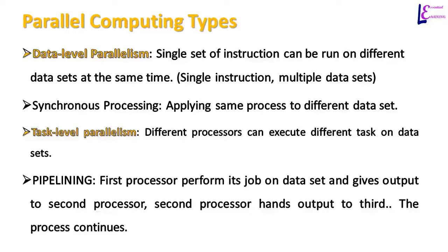In task level parallelism, different processors can execute different tasks on different data sets. This is the same concept as pipelining. In pipelining, the first processor performs its job on a data set and gives output to the second processor. The second processor performs its job and passes the output to the third. This process continues until the program is executed.